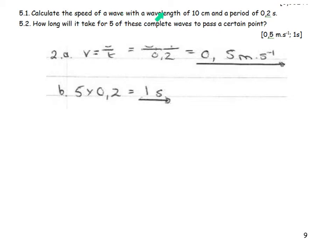Calculate the speed of the wave with a wavelength of 10 centimeters and a period of 0.2 seconds. So V is equal to distance over time. I have to change that 10 centimeters. And therefore, I get 0.1 meters. And I divide that by 0.2 seconds. And I get 0.5 meters per second.